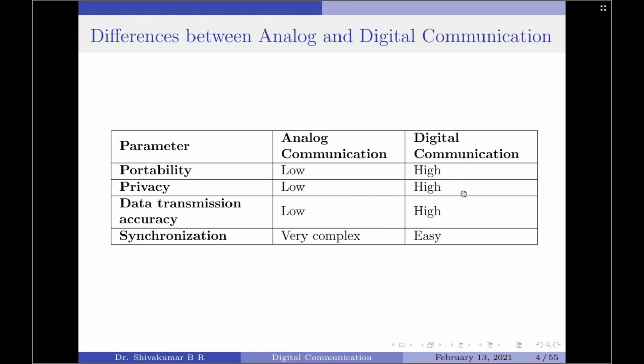The next parameter is data transmission accuracy. The accuracy of data transmission for analog communication is considerably low, whereas for digital communication it is considerably high. Lastly, we talk about synchronization. It is very essential to have the transmitter and receiver synchronized for proper transmission of data from source to destination.